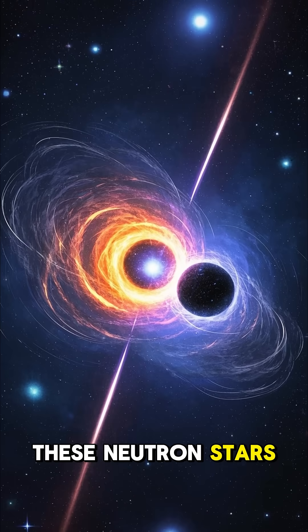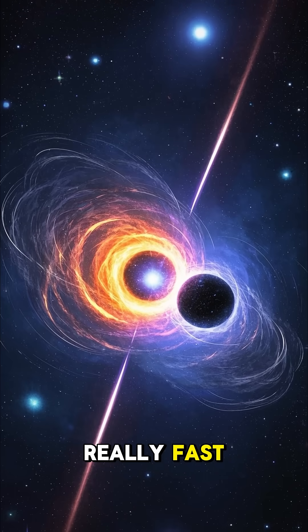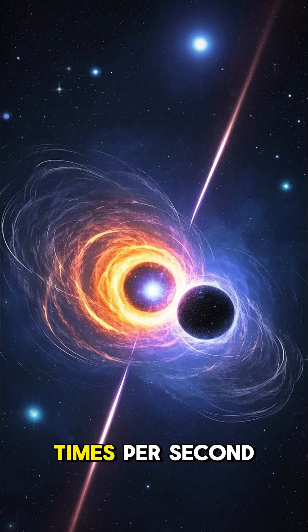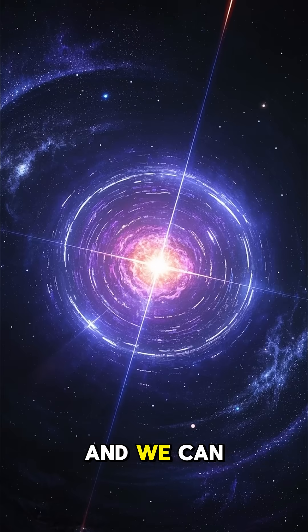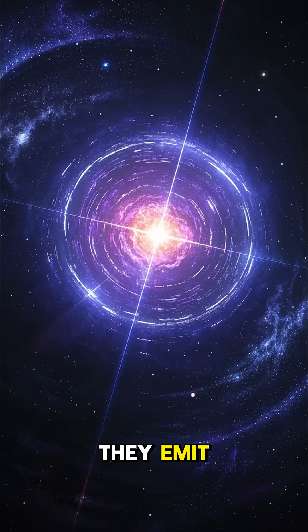But some of these neutron stars are still spinning really fast, up to 700 times per second. And we can actually see them by looking at the light that they emit.